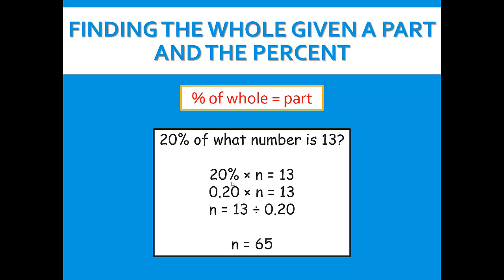So we have 20 percent times n equals 13. We're going to change 20 percent to a decimal, and that would be 20 hundredths. So we have 0.20 times n equals 13. Now we need to divide both sides by 20 hundredths, so we get n equals 13 divided by 0.20.